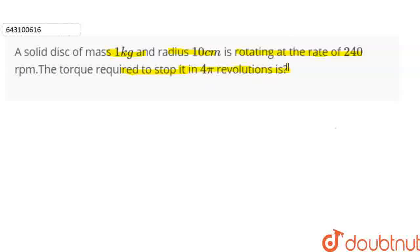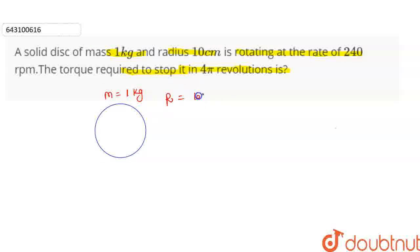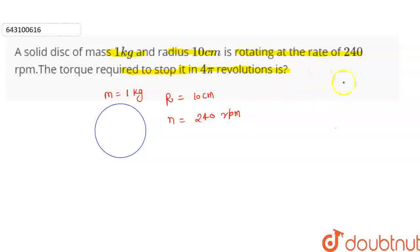So in this question, we have a solid disk with mass 1 kg and radius 10 cm. The rotation per minute — that is, revolution per minute — is 240 rpm. And we need to find the torque required to stop it in 4π revolutions. Since we have to stop it, the final angular velocity is 0.